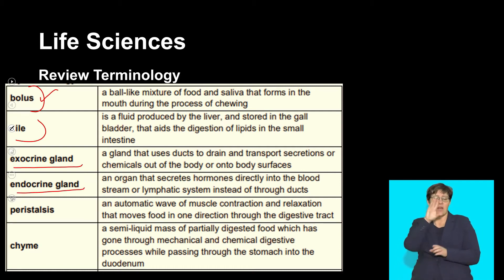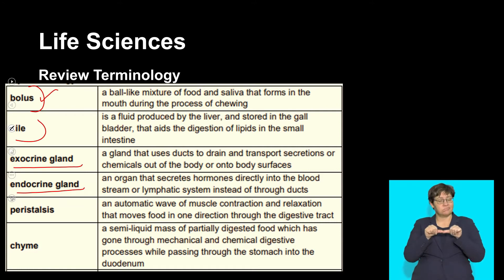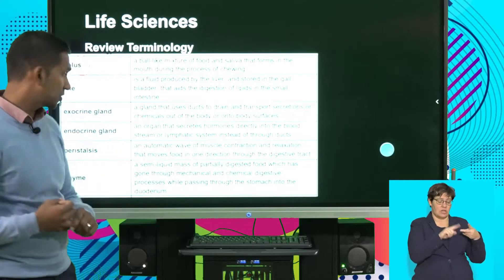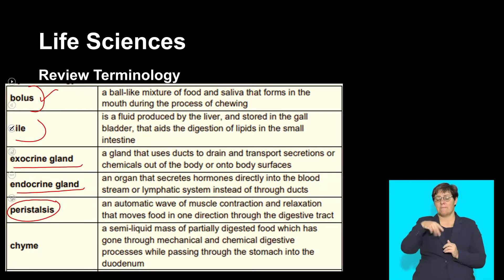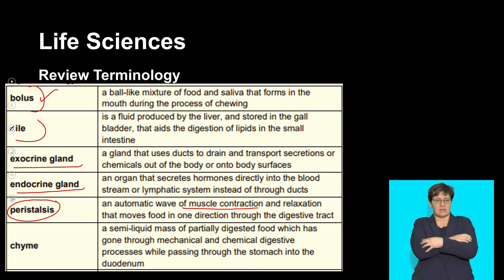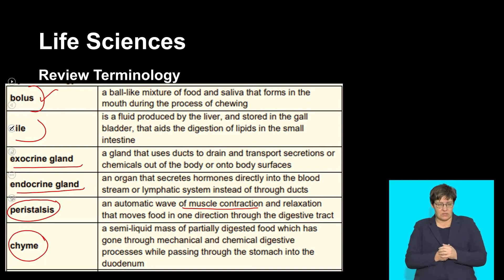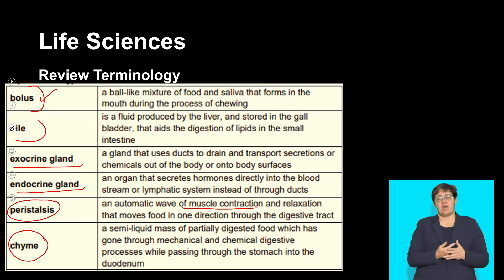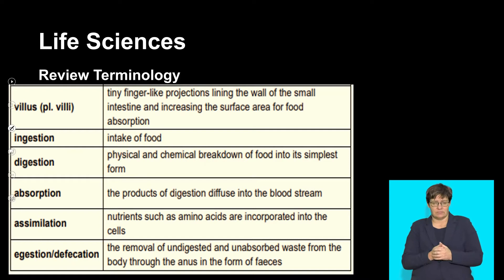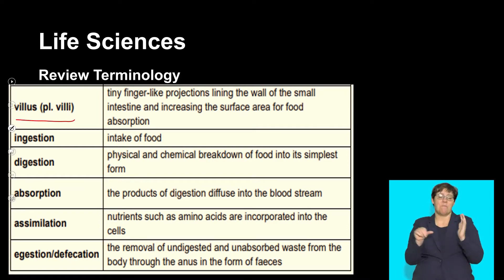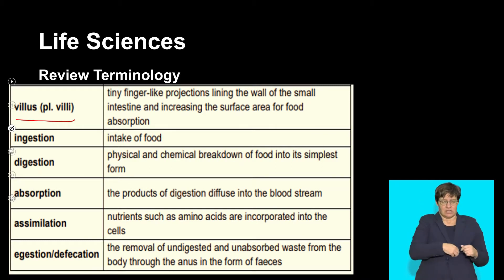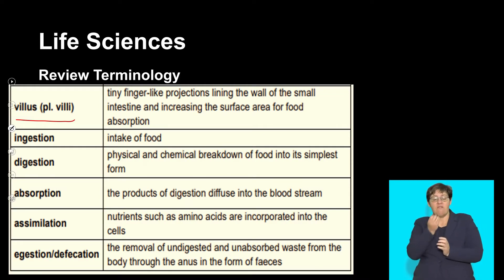The pancreas is both an exocrine and endocrine gland, producing enzymes as well as hormones such as insulin and glucagon, which are discussed when we talk about maintaining homeostasis. Peristalsis describes how muscles contract and propel food along the digestive system. Chyme is the product that moves from the stomach into the small intestine after being mixed with digestive juices. The villus structure is very important in understanding the adaptation of the small intestine for absorption and maximizing nutrient uptake.